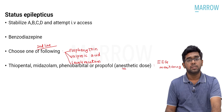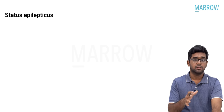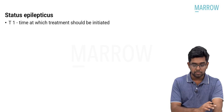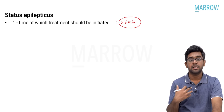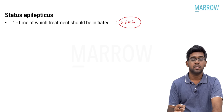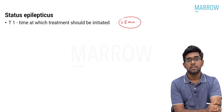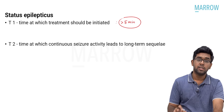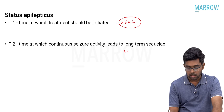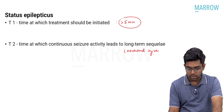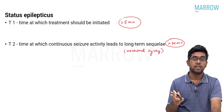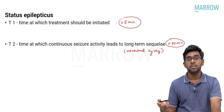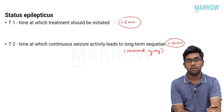Definition of status epilepticus has two timelines. T1 — the time at which treatment should be initiated — is any seizure lasting more than five minutes, as it is unlikely to stop on its own, mandating IV antiepileptics. T2 — the time at which continuous seizure activity leads to long-term neurological sequelae like neuronal injury — is defined as more than 30 minutes. The timeline for status epilepticus has been modified: start treatment at more than 5 minutes; neurological problems likely after more than 30 minutes.